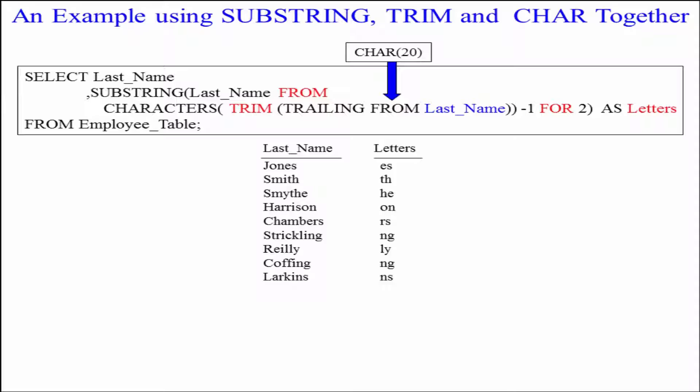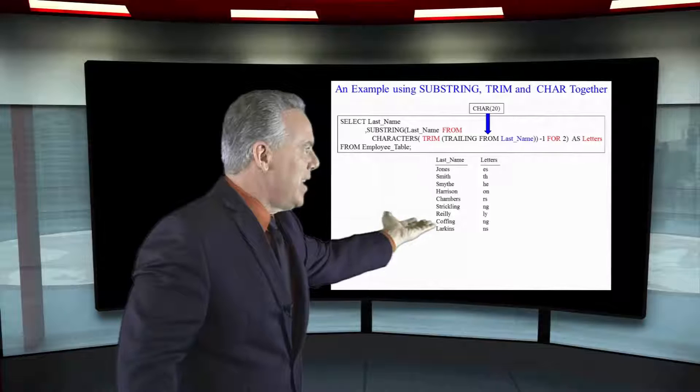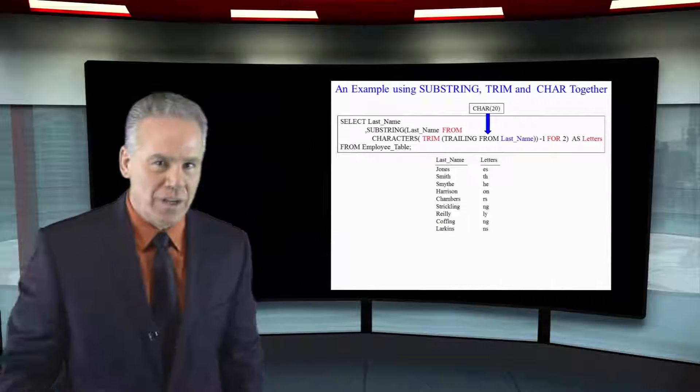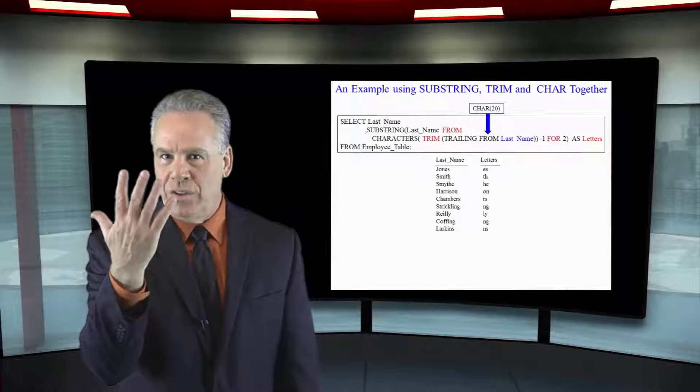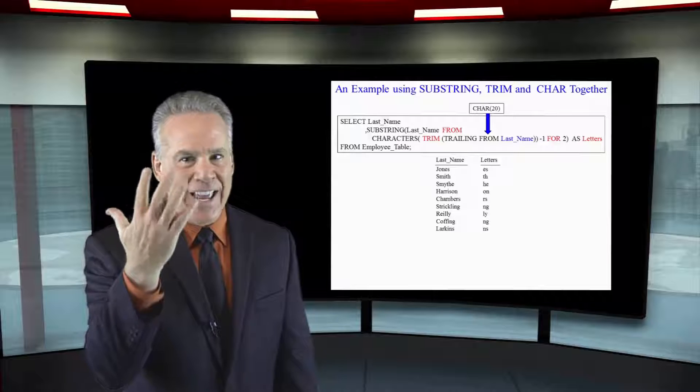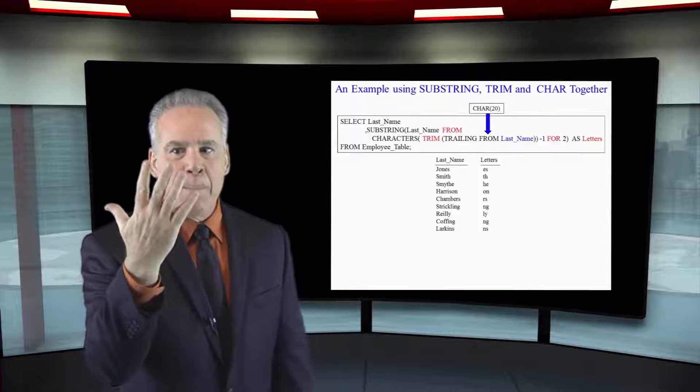But the minus one here says look, Jones trim Jones then count the characters in Jones, five minus one start in position four and go for two and that's going to give me the last two letters of Jones.